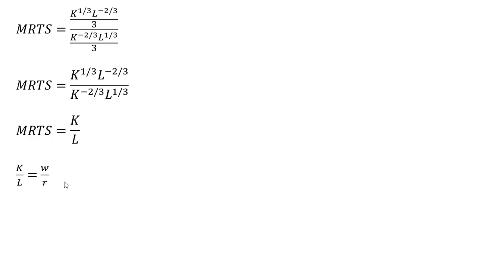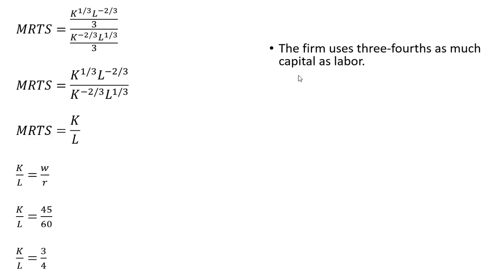We set MRTS equal to the ratio of the wage to the price of capital. The wage was $45 and the price of capital $60, giving us our cost minimizing capital to labor ratio of 3/4. So the firm uses 3/4 as much capital as labor in order to be minimizing the cost of production.